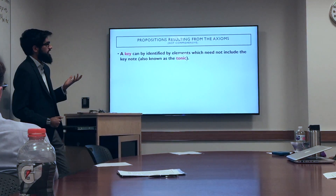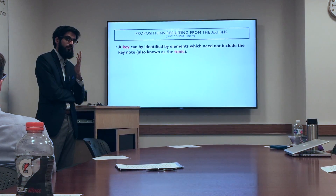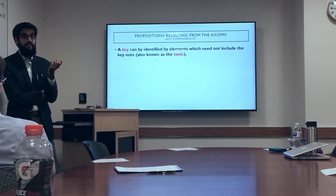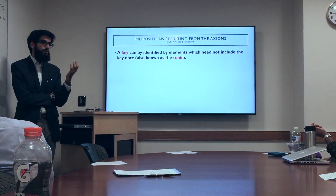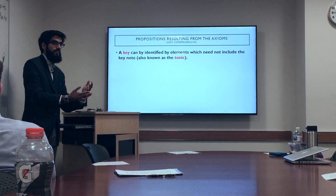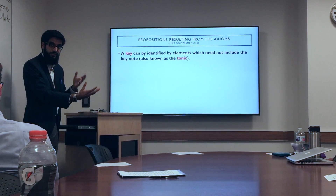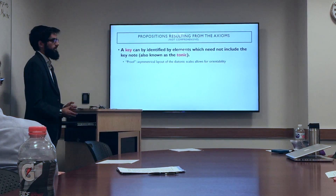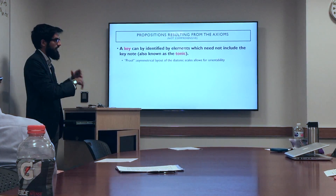One proposition is that a key can be identified by elements which need not include the keynote. This is not necessarily intuitive — in some systems, like arithmetic, you can only state something by stating it explicitly. But in the tonal system, for a specific reason I'll prove, you can imply a pitch without stating it explicitly. The proof lies in the asymmetrical layout of the diatonic scale.